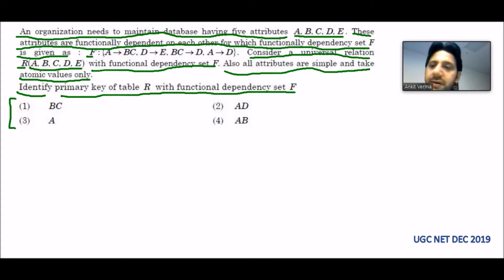In this question we're given a relation ABCDE. First I am taking all the attributes A, B, C, D, E. Then they are saying there are some functional dependencies given as set F.